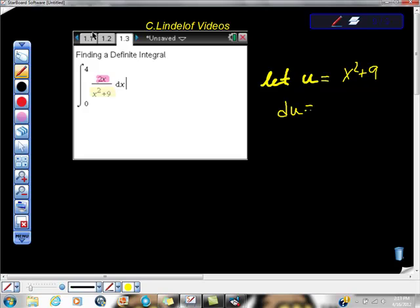I'm going to say, well, then du, the derivative of u would be 2x dx, wouldn't it? And from here, I'm going to solve for dx, and I'm going to say that du over 2x is equal to dx.